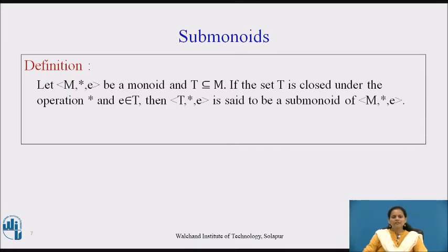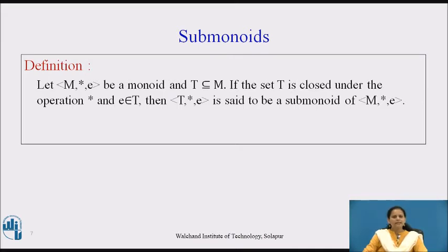Here is the answer — the definition for a sub-monoid. Let (M, *, e) be a monoid, where M is any set, * is an operation, and e is the identity element with respect to *. Recall that a monoid is a semi-group that has an identity element. Now, let T be any set which is a subset of M. If T is closed under the operation * and e belongs to T, then (T, *, e) is said to be a sub-monoid of (M, *, e).